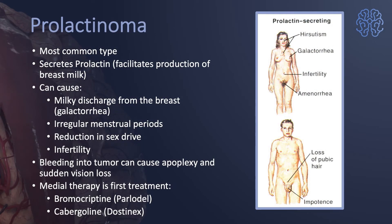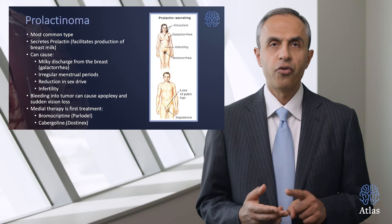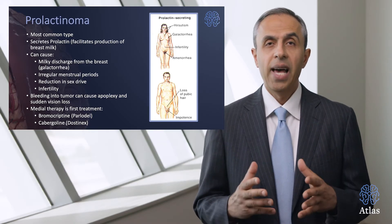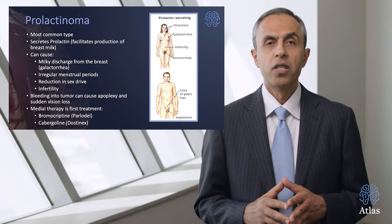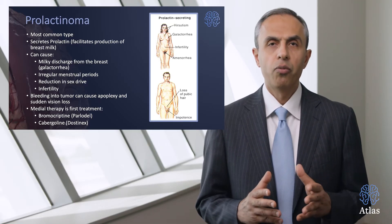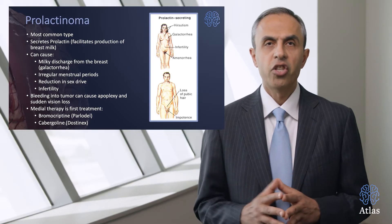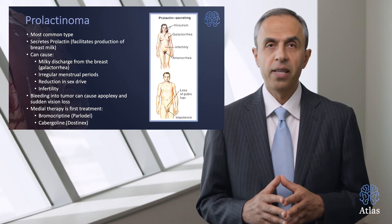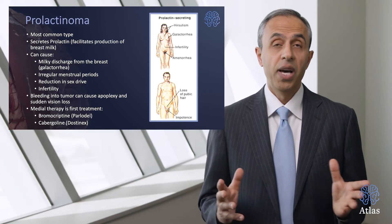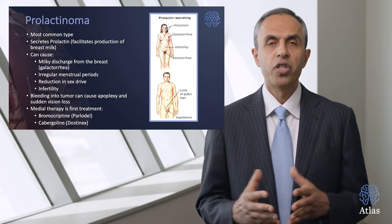If the patient has excess secretion of prolactin, this may cause a milky discharge from the breast called galactorrhea. It may lead to irregular menstrual periods, reduction in sex drive, and infertility. Bleeding into these tumors can cause what we call apoplexy and lead to significant sudden visual loss and even blindness. Medical therapy is the first line of treatment — bromocriptine or parlodel or other medications may be used, and most prolactinomas can be treated medically without a need for surgery.